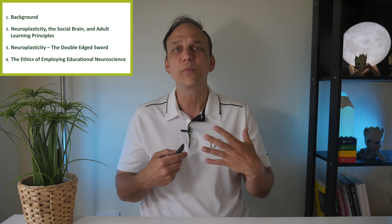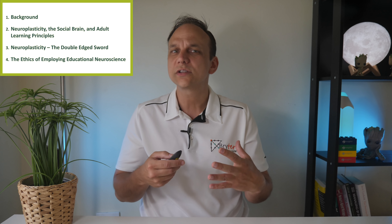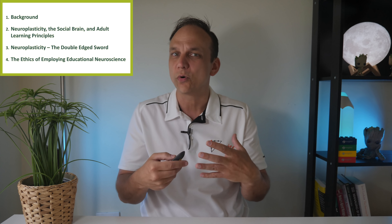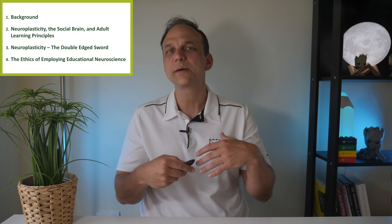This video is divided into four sections, and you can jump to each section by clicking on the timestamps in the description below. I'll start with a brief background identifying common challenges managers report when organizing training, then introduce the concept of neuroplasticity, discuss how the brain as a social organ links to adult learning principles, and then share elements to support learning retention.